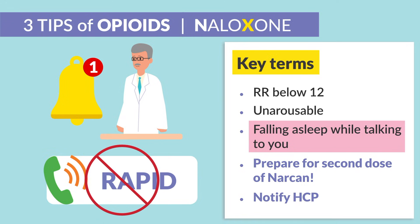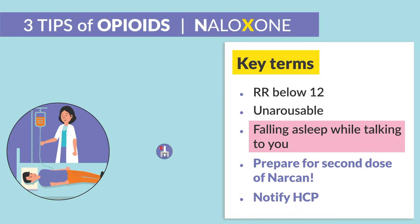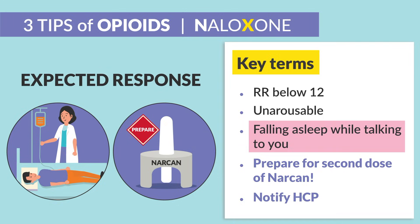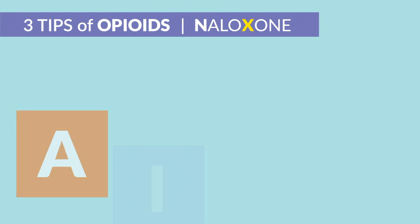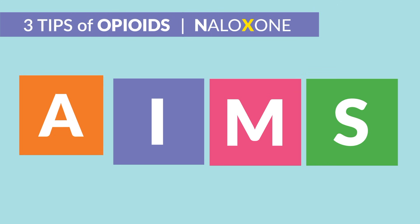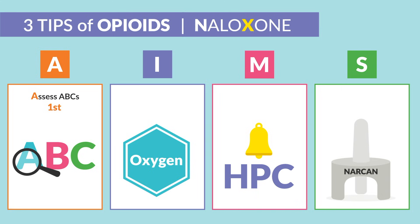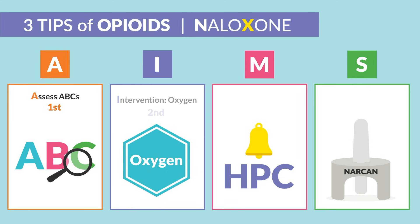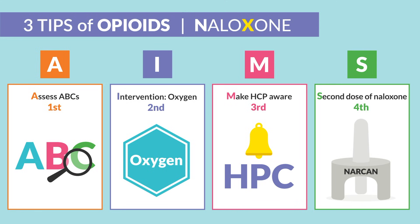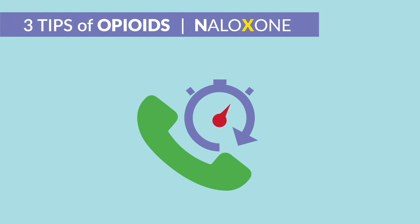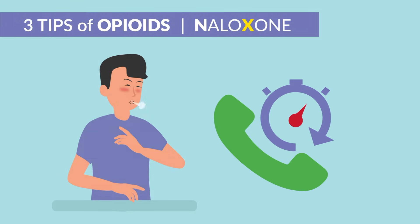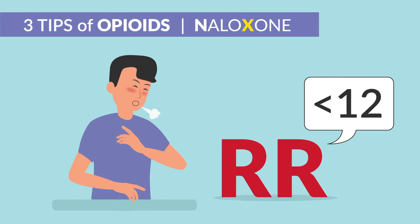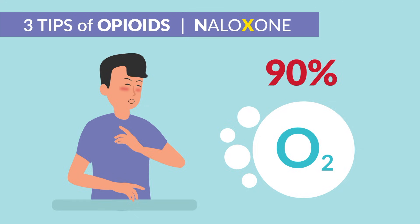Don't worry about calling a rapid response right away — always assess the patient and prepare the Narcan since this is an expected response. The priority nursing care is AIMS: A is for assess the ABCs — this is priority during respiratory sedation. I is for intervention of oxygen. M is for make the HCP aware. S is for a second dose of naloxone. There's no need to call for a rapid response unless the airway and breathing are critically low — below 12 respirations or below 90% O2 sat.